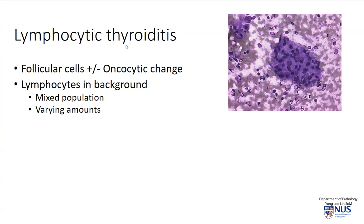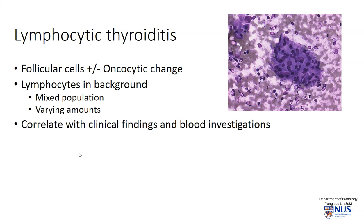Lymphocytic thyroiditis is actually a spectrum of conditions that includes focal infiltration of the thyroid gland by lymphocytes or lymphoid follicles, all the way to autoimmune thyroiditis or Hashimoto thyroiditis. We would see follicular cells with or without oncocytic change; if oncocytic change is very prominent, we would think more along the lines of Hashimoto thyroiditis, with lymphocytes of a mixed population seen in varying amounts. It is important to prompt clinicians to correlate with clinical and serologic findings if we are suspecting autoimmune thyroiditis.